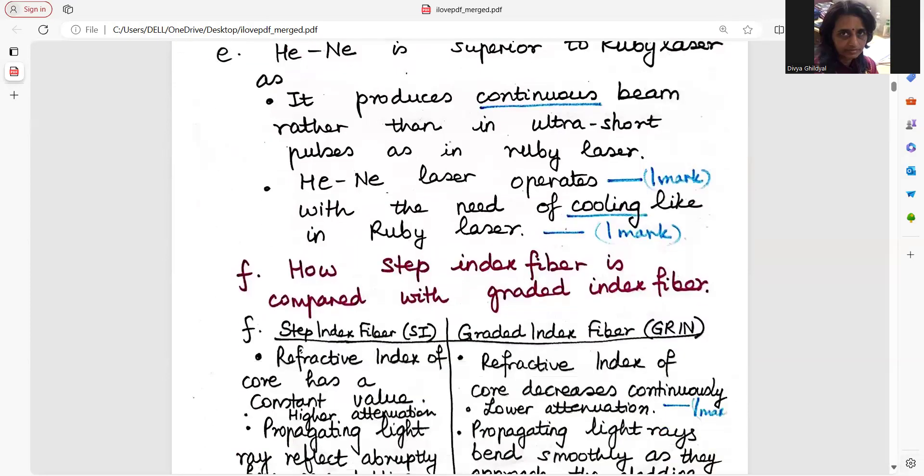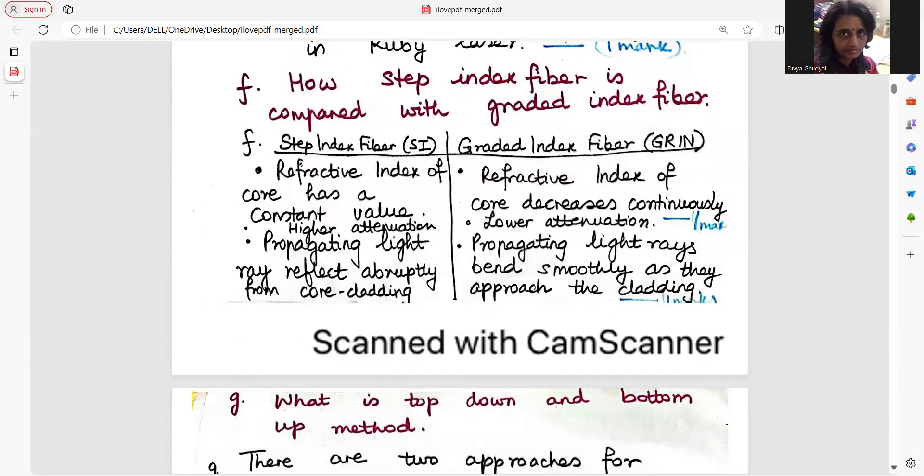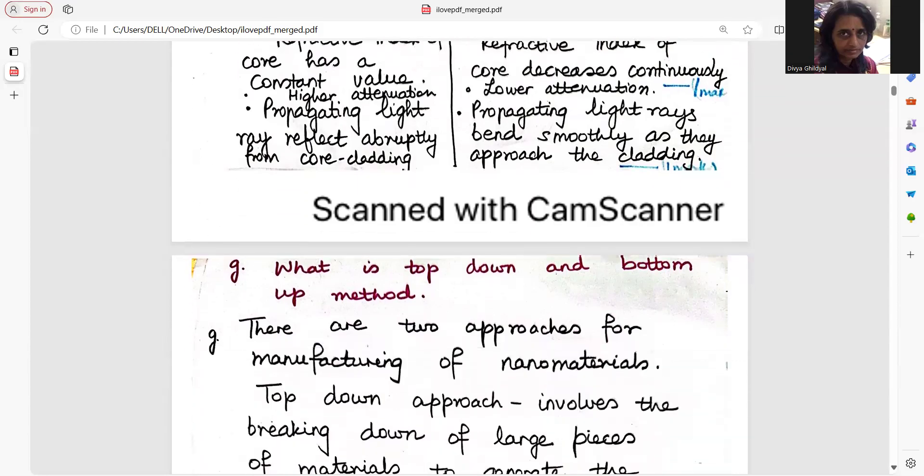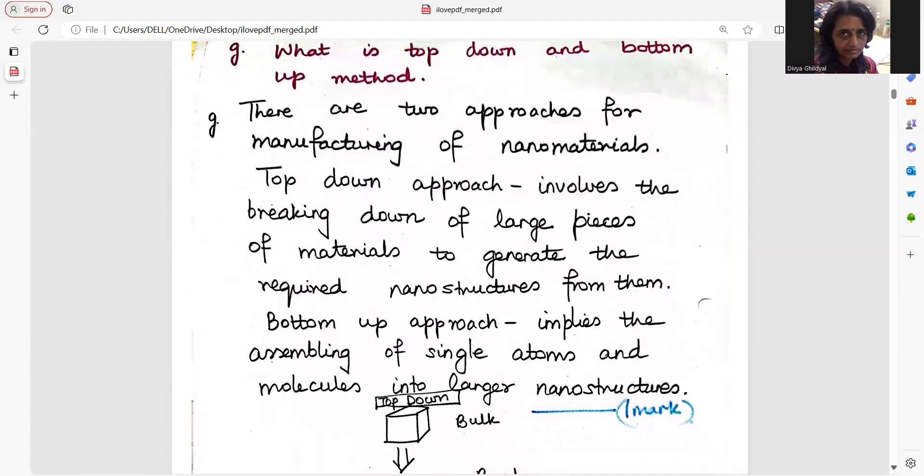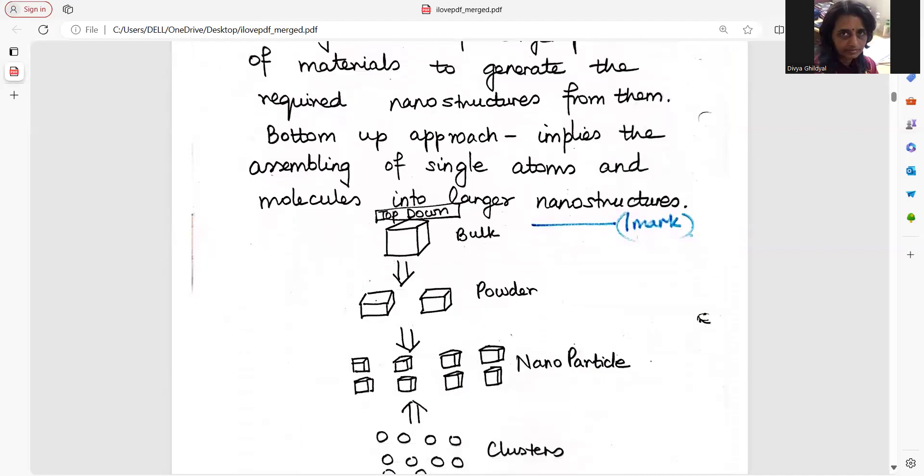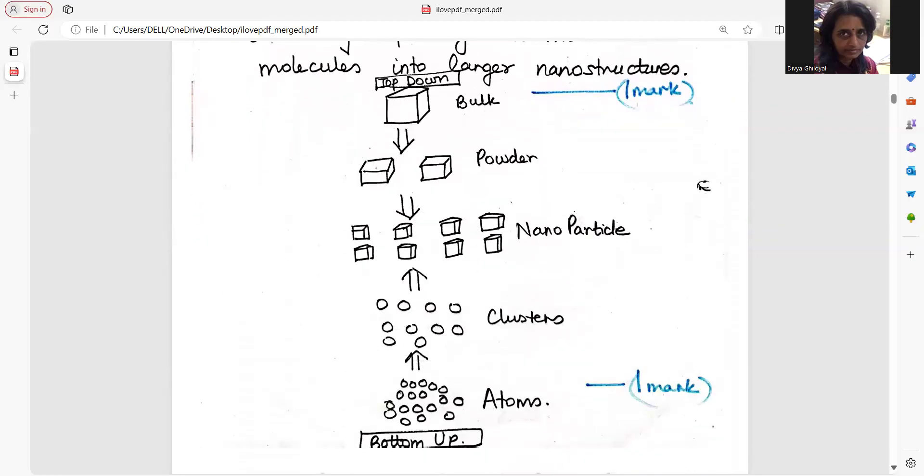Output of helium neon laser is a continuous beam. Ruby laser gives output in the form of pulses. Helium neon laser does not require any cooling system whereas ruby laser requires. This is just a two mark question, so two points are more than enough. How step index fiber is compared with graded index? Step index: the refractive index of core has a constant value whereas in graded, the refractive index is continuously varying. The attenuation in step index is higher. In grading it is low, and the propagating light ray reflects abruptly here but here it is smooth. What is top-down and bottom-up method? This is nanotechnology. There are two approaches for manufacturing of nanomaterials. Top-down involves the breaking up of large pieces to generate nanostructures, and in bottom-up assembling single atoms or molecules into larger nanostructures. Better you draw the diagram.